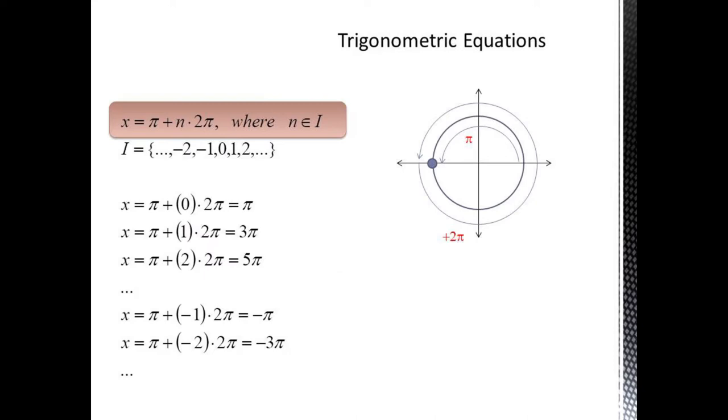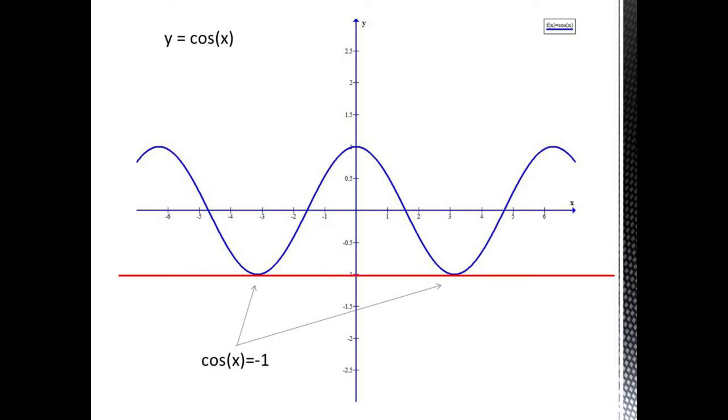You can see here that if n equals 0, we just get our original solution pi. If n equals 1, we add one full wrap and get 3 pi. If n equals minus 1, we wrap backwards and get minus pi. So this notation gives us every possible congruent solution.